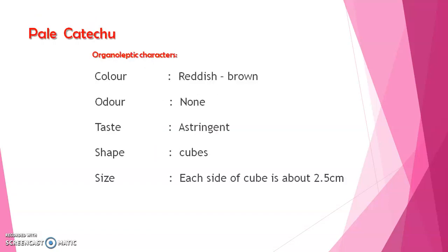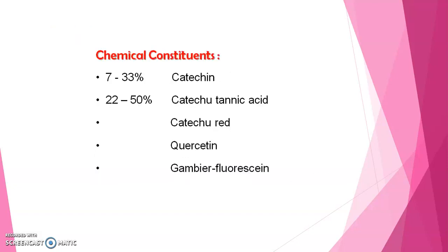Organoleptic characters of pale catechu: color is reddish brown, odor is none, taste is astringent, shape is cubes with each side about 2.5 centimeters. Chemical constituents include 7 to 33 percent catechin, 22 to 50 percent catechutannic acid, and it also contains catechu, quercetin, gambier fluorescence.